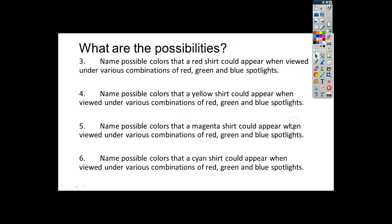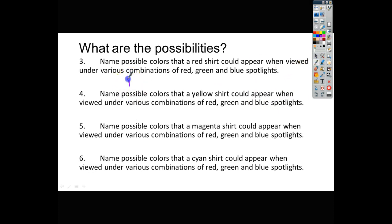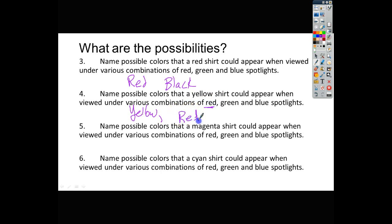The next page asks what colors a red shirt could appear under combinations of red, green, and blue spotlights. Yellow is a combination of red plus green, so under all three it could appear yellow. Under just red light it will appear red. Under green light it will appear green. Under blue light it doesn't reflect blue at all, so you would get black.